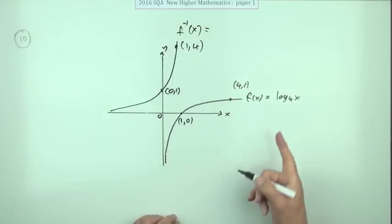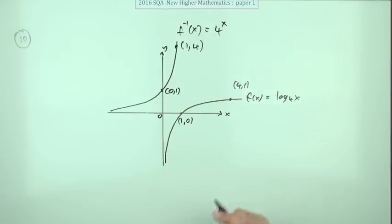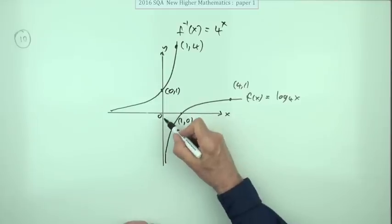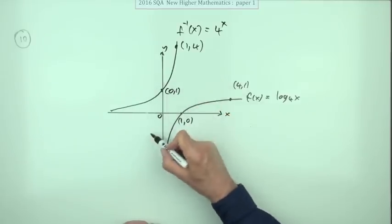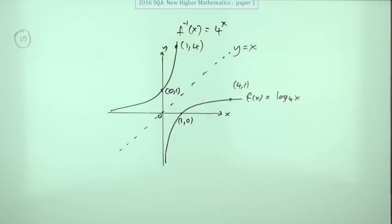And in case they want the name as well, the inverse of log base 4 would be 4 to the power x. The other thing you might want to add in your diagram is the fact that they must be reflections of each other in the line y equals x.